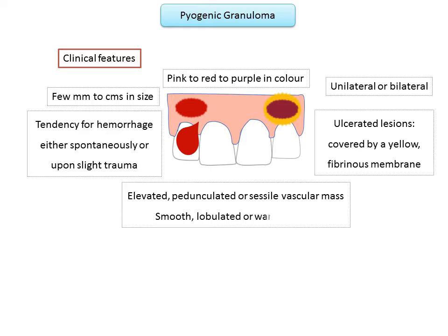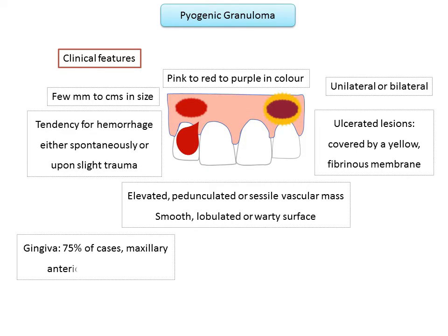Occasionally lesions may become ulcerated due to secondary trauma, and ulcerated lesions may become covered by a yellow fibrinous membrane. The lesion is usually an elevated pedunculated or sessile vascular mass with a smooth, lobulated, or warty surface. Oral pyogenic granulomas show a striking predilection for the gingiva, accounting for 75% of all cases, more common on the maxillary gingiva, in anterior regions, and on the facial aspect.